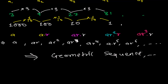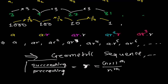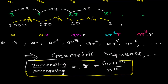All progressions are sequences, but not all sequences are progressions. To summarize in one line: if the ratio of the succeeding term over the preceding term is constant — that is, the (n+1)th term divided by the nth term always equals r — then that sequence is called a geometric sequence.